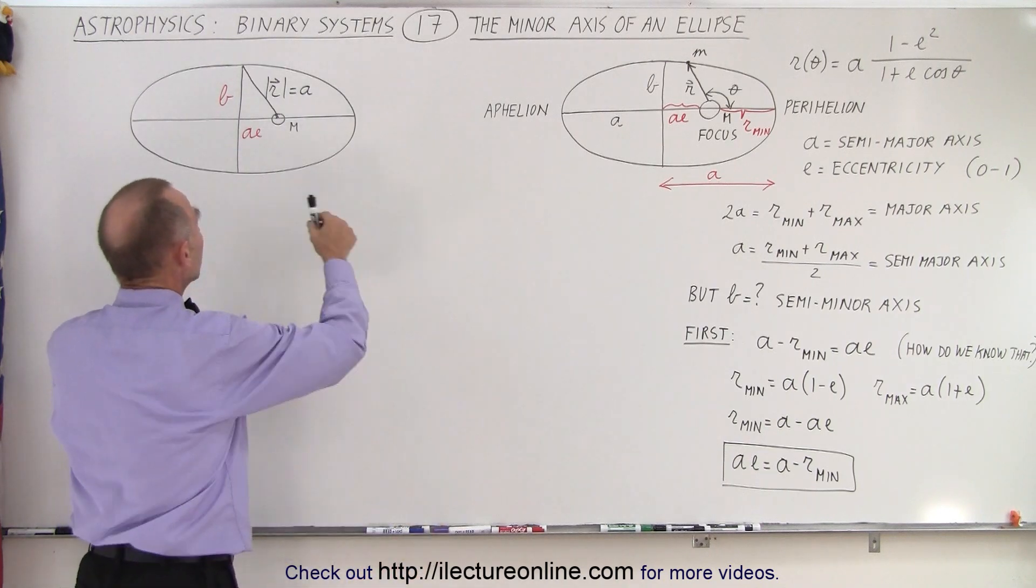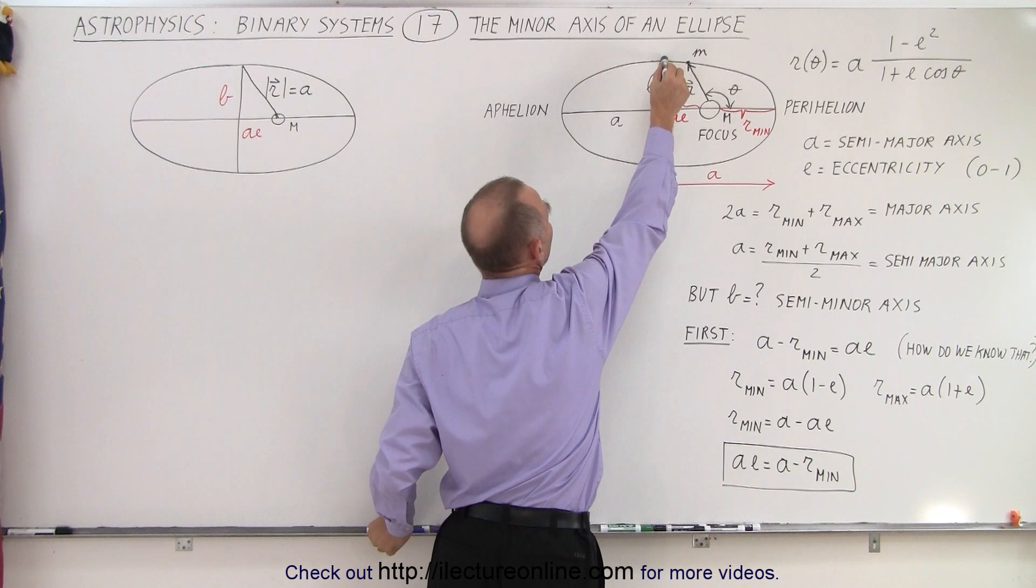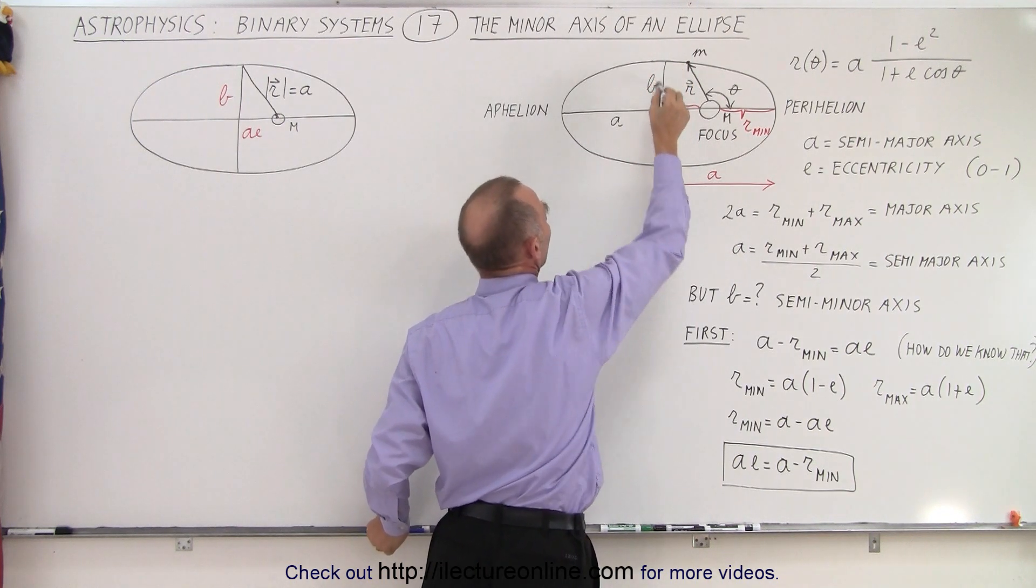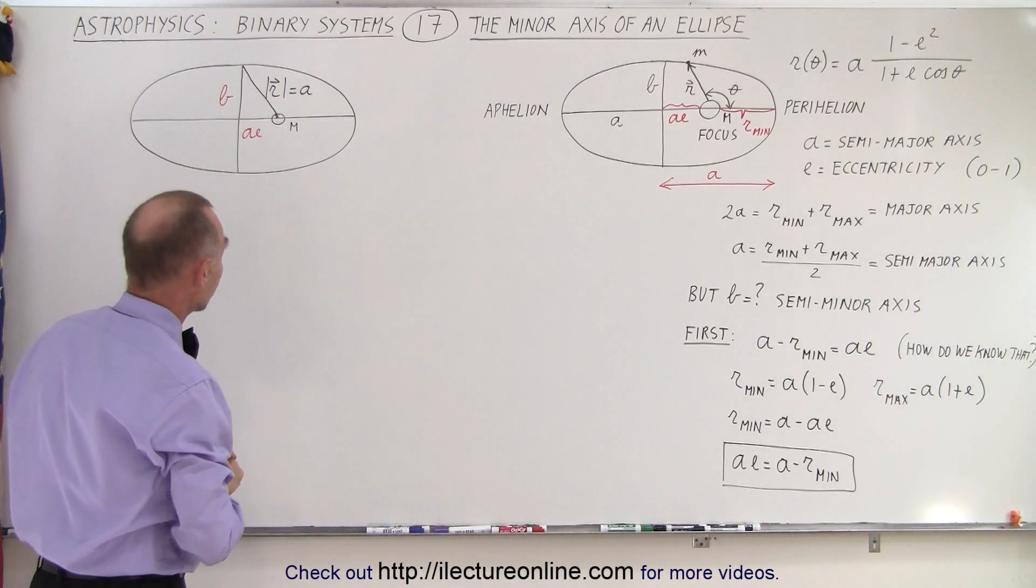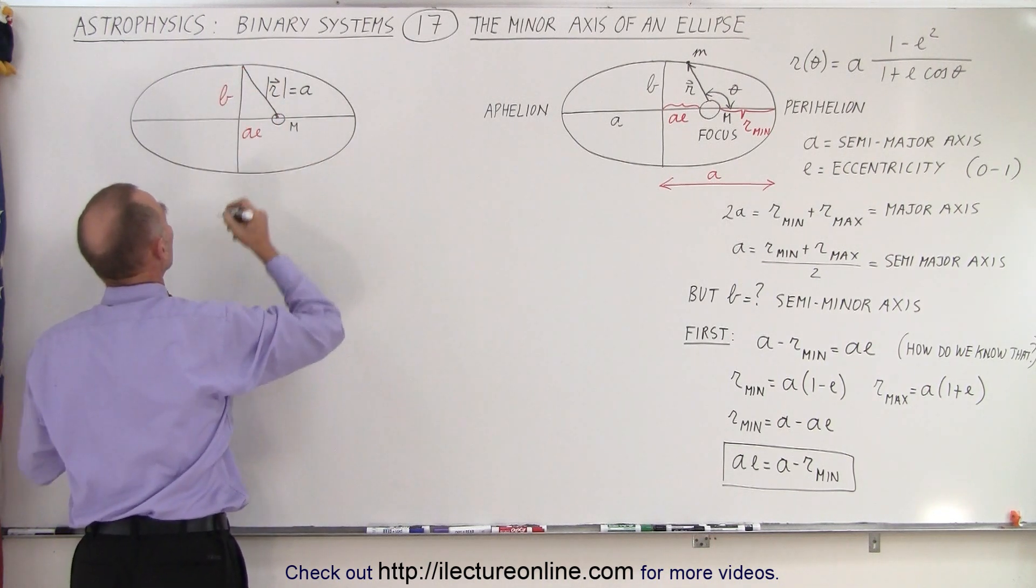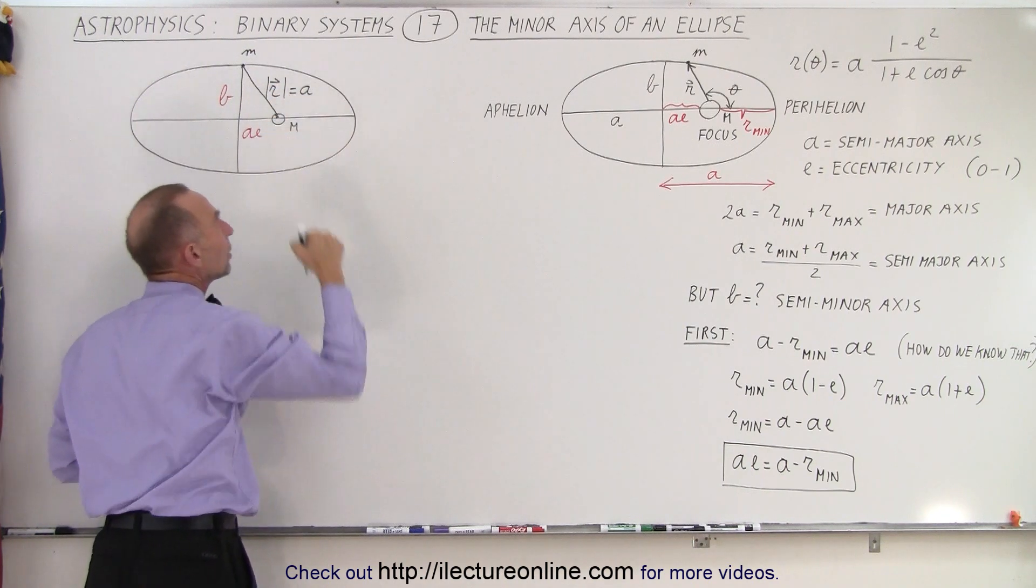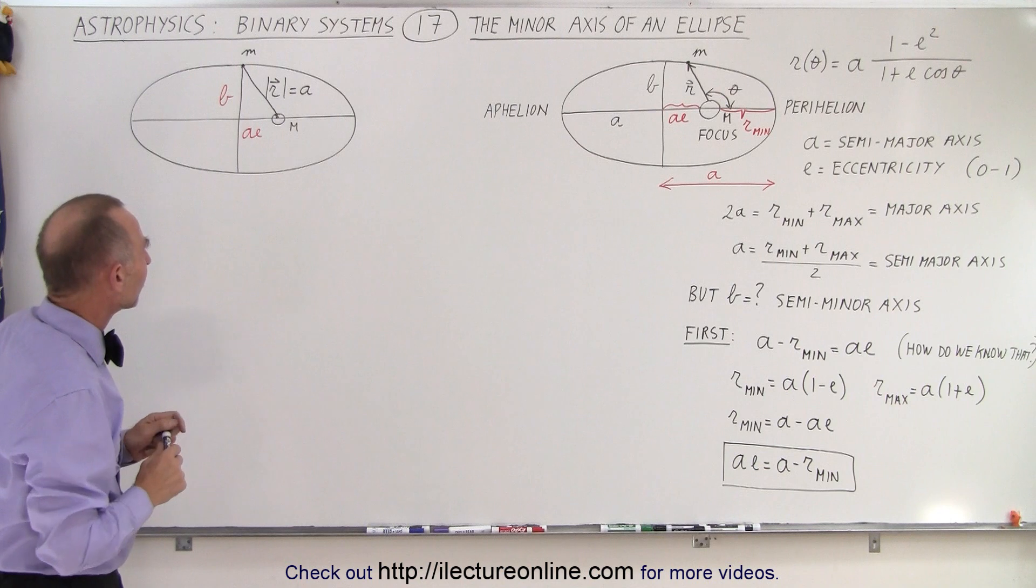Now we're going to take a look over here. Notice what happens when the planet hits this point right there, the point here that defines the distance B, which is the semi-minor axis. Well, at that point, the distance from the sun to the planet—if we assume the planet is over here—that distance r is now equal to A.